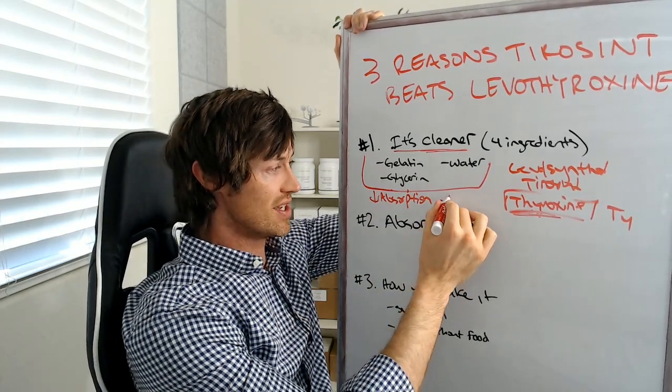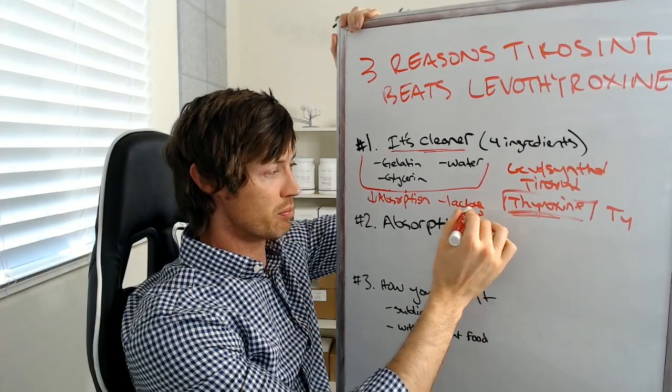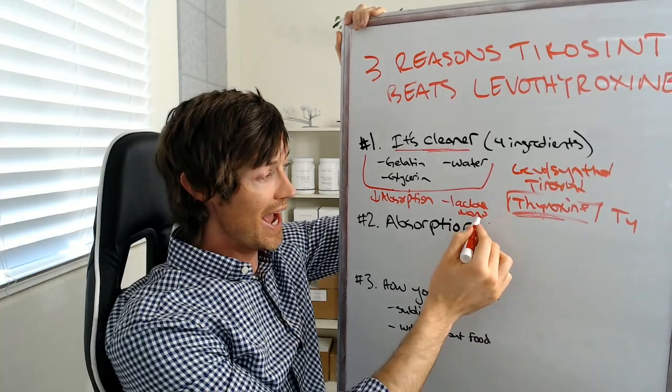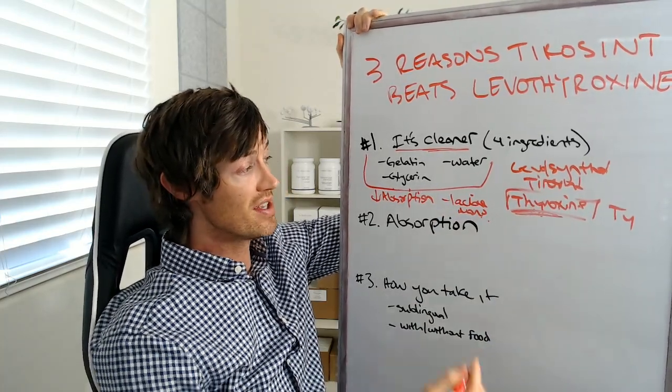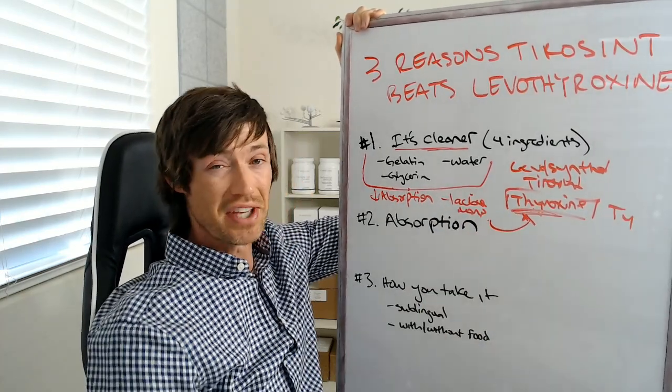In fact, one of the inactive ingredients in Levothyroxine is lactose monohydrate. It contains lactose. So if you have lactose intolerance and you're taking Levothyroxine, you might be reacting to the lactose inside of the medication. Now, in some cases, these inactive ingredients can completely negate the benefits of the active ingredients.